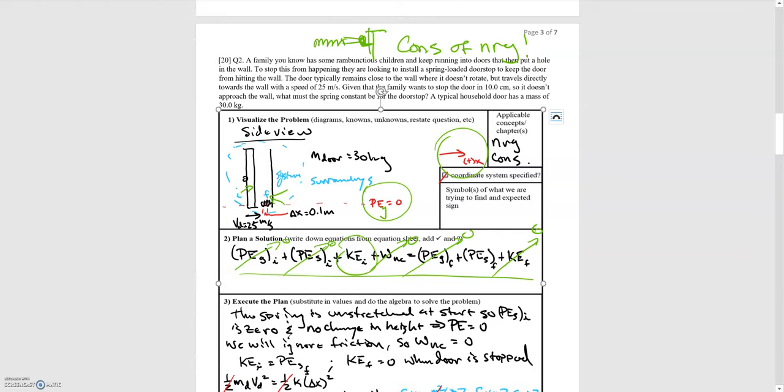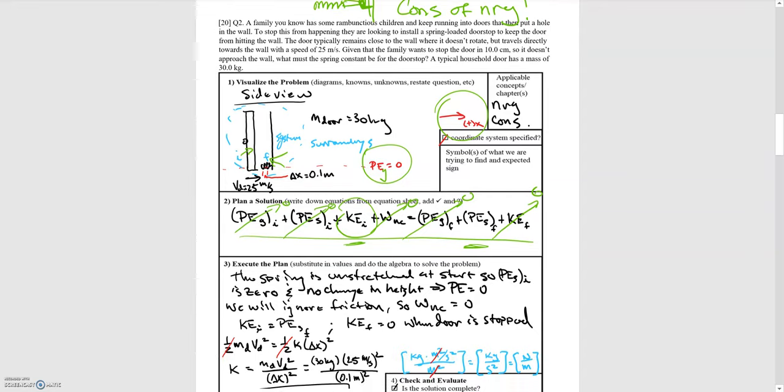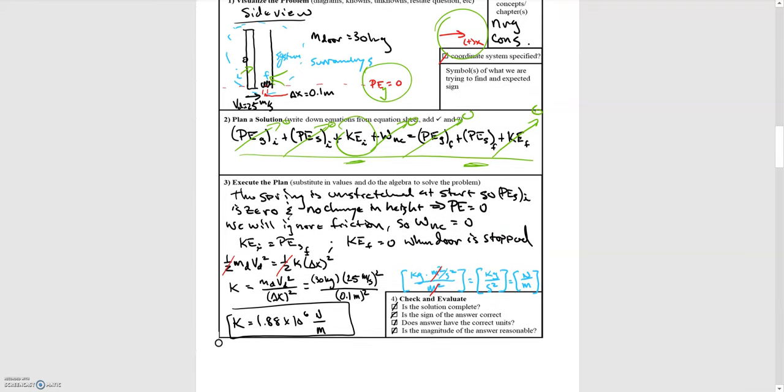So all we're left with is two terms. Initial kinetic energy gets transferred into spring potential energy. So we just use our equations for kinetic energy. Kinetic energy is equal to one-half times the mass times the velocity squared. The spring potential energy is equal to one-half times the spring constant k times the displacement squared from the unstretched position.